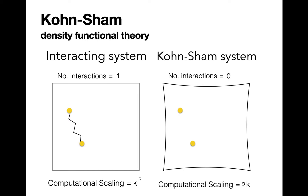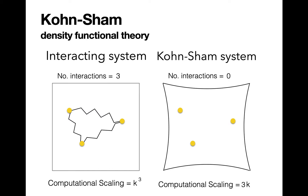When an electron is added to the many-body system, the electrons are repelled by each other. Within the Kunsham system, in order for the non-interacting density to reproduce the effects of the Coulomb interaction, the external potential changes. This potential is called the Kunsham potential and it is responsible for ensuring the non-interacting density is equal to the many-body density.